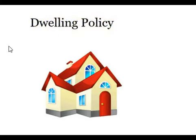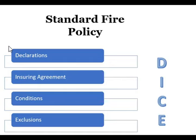Before I go over the dwelling policy, I want to touch base on the standard fire policy. This is a basic fire insurance policy — fire insurance is just another name for property insurance. The very first fire insurance policy and the foundation of fire insurance started in 1943. It was first used in New York and adopted the name of the New York Standard 165-line fire policy. It's important to know about this before learning the dwelling and homeowners policies because essentially this policy is used as the foundation to other property policies such as the dwelling and homeowners.